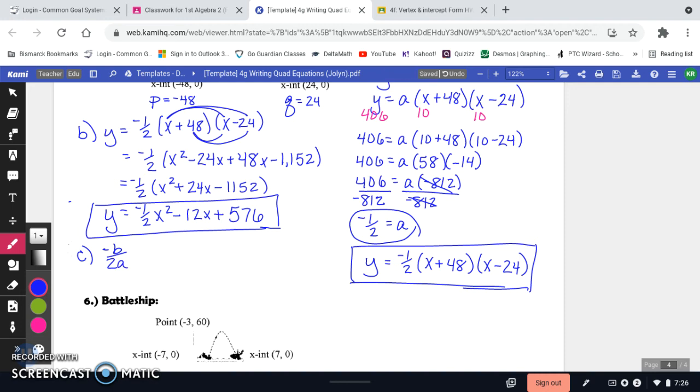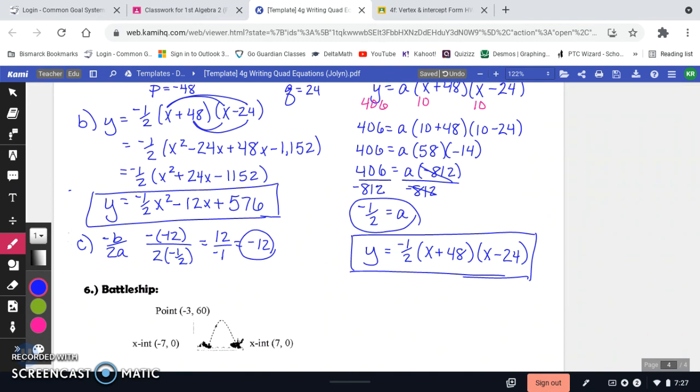So my B is negative 12. So the opposite of a negative 12 all over 2. And then my A is a negative 1 half. So this will be positive 12 divided by negative 1. So negative 12. So there's the X coordinate for my vertex. So now, vertex is going to be negative 12. And then we need to find the Y value.